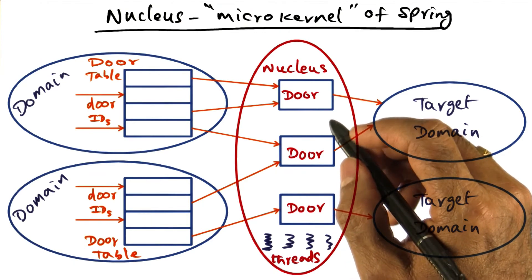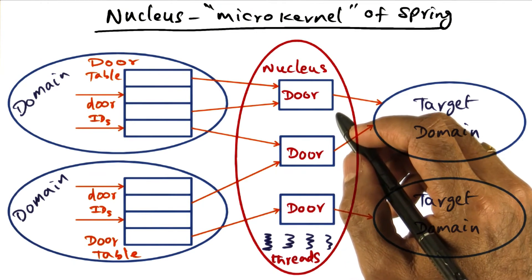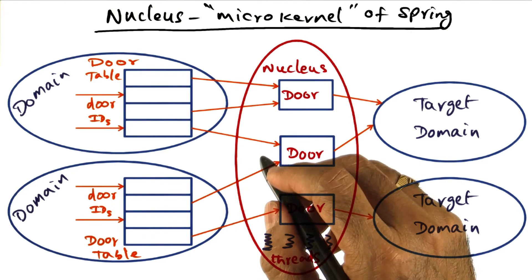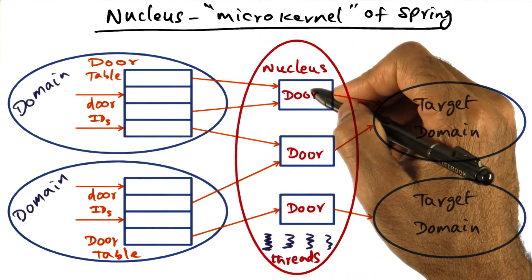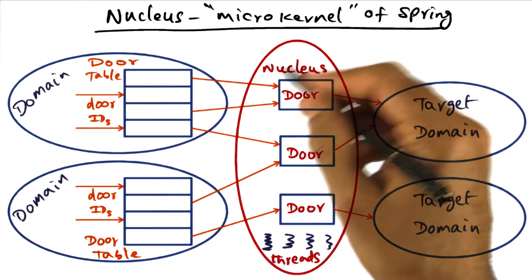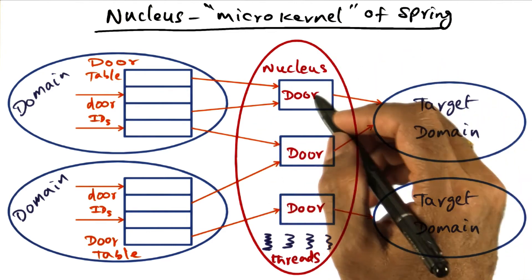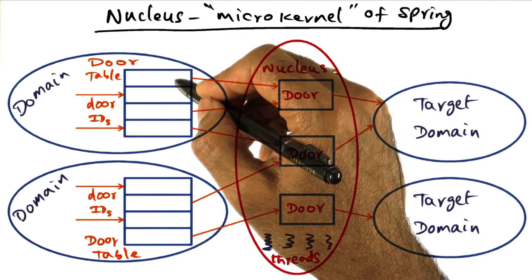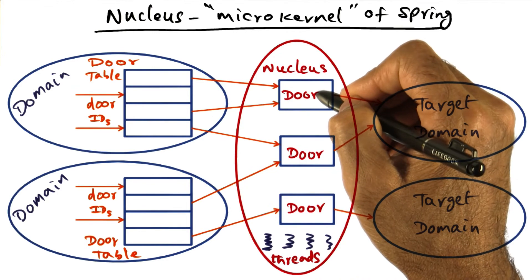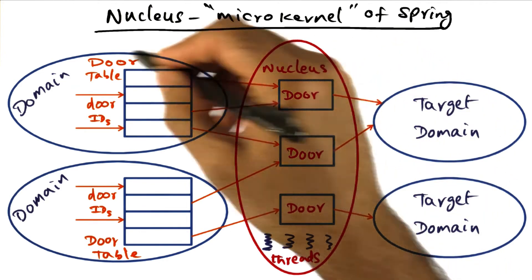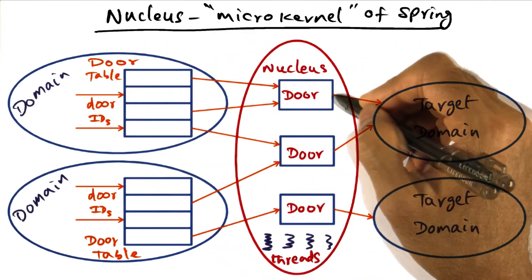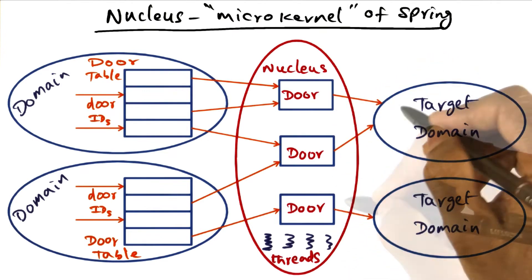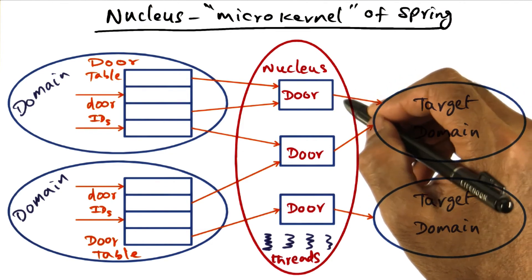How do you make an object invocation — that is, a protected procedure call from a client domain into a target domain? The Nucleus is involved in every door call. When I make an invocation using the door handle, the Nucleus looks at it, verifies that this domain has the ability to do this invocation, allocates a server thread in the target domain, and executes the invocation indicated by that door handle.